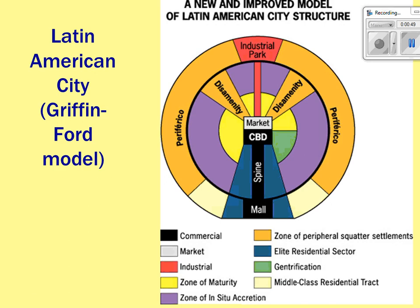In the Latin American model, you have a CBD somewhat in the middle. There's also a mall, which is commercial, and the spine connects those two with commercial retail space along it. Outside the spine is where you find the richer elite residential sector. A much larger percent of the population is poor, living in the periferico and disamenity sector — the disamenity sector is often controlled by gang lords or drug lords.